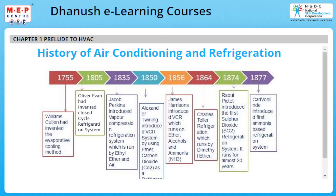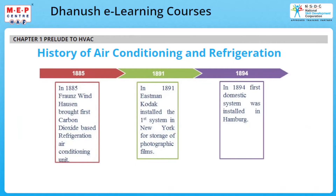In 1864, Charles Teller introduced refrigeration running on dimethyl ether. In 1874, Raoul Pictet introduced the first sulphur dioxide refrigeration system, which ran for almost 20 years. In 1877, Karl Wontlein introduced the first ammonia-based refrigeration system. In 1885, Franz Windhausen brought the first carbon dioxide-based refrigeration air conditioning unit. In 1891, Eastman Kodak installed the first system in New York for storage of photographic films. In 1894, the first domestic system was installed in Hamburg.